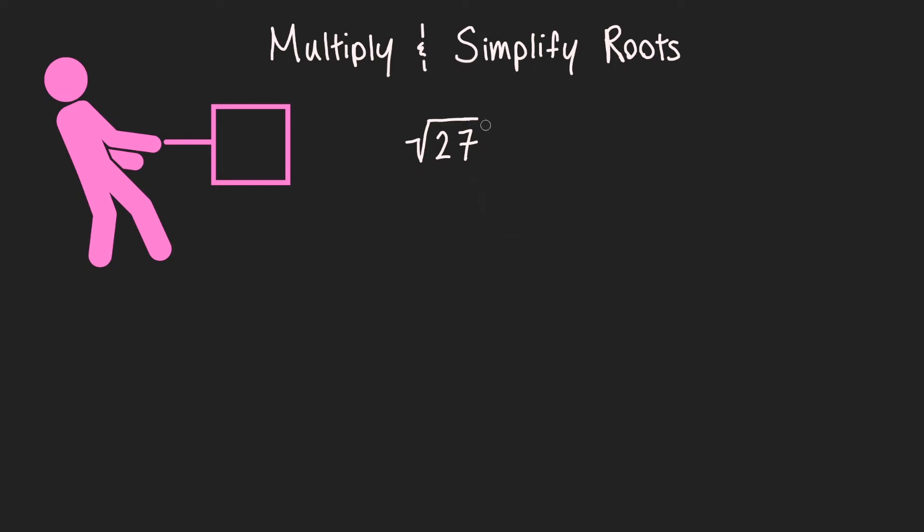So the first thing you want to do when you simplify a root is to factor down that 27. So what two numbers can multiply together to make 27? Well, 9 times 3 equals 27, right? So we can turn the square root of 27 into the square root of 9 times 3.